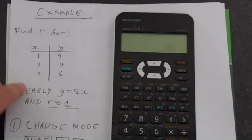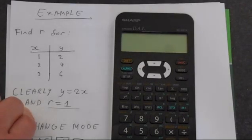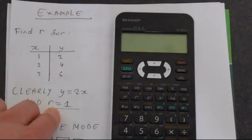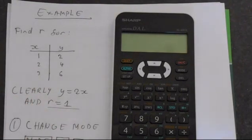And the straight line's tending up the way, so we're going to get R equals 1. That's fairly simple.